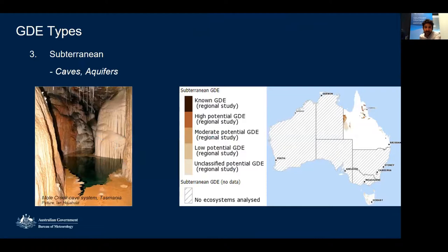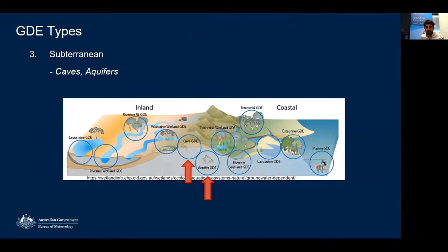The third type is subterranean GDEs — caves and aquifers. We have fairly limited coverage of this at the moment because the original national assessment only covered terrestrial and aquatic GDEs. We've collaborated with state agencies to get subterranean data onto the Atlas, and are looking to increase coverage over time. The organisms living in aquifer GDEs are called stygofauna — small organisms that live in the aquifer.